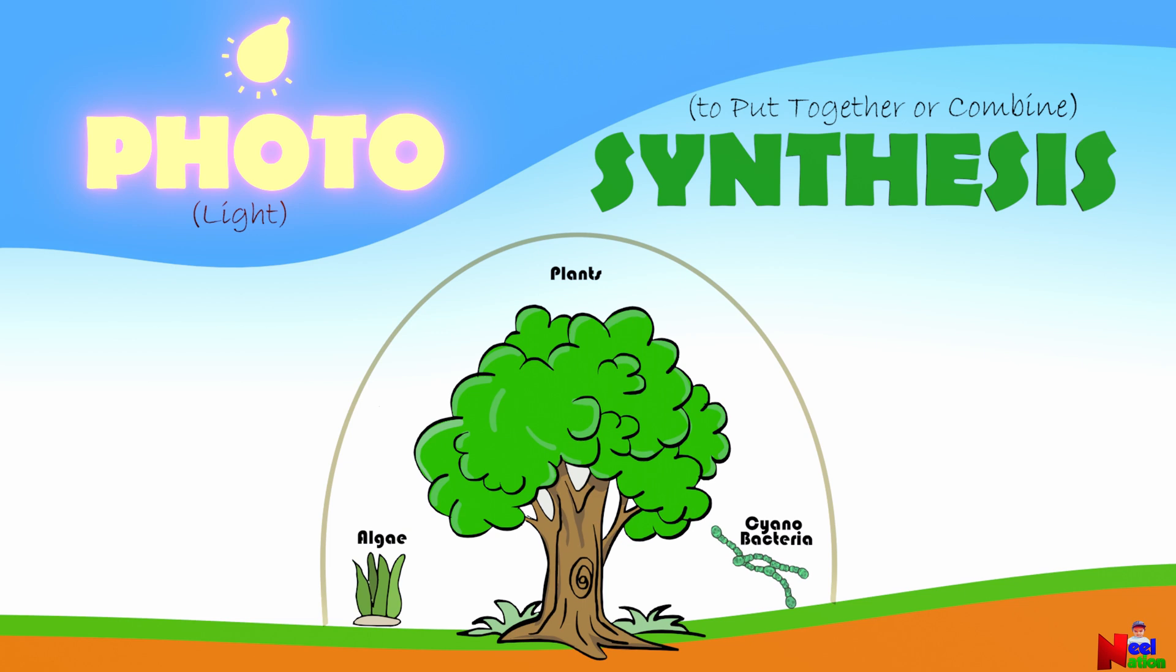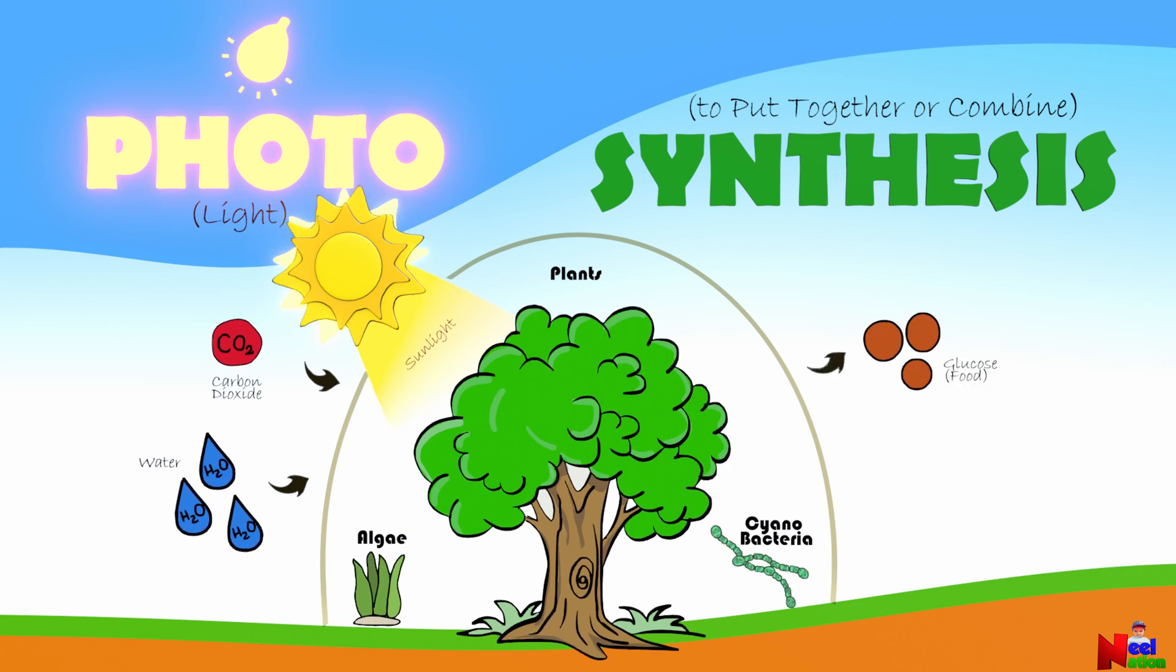Photosynthesis is the process by which green plants and other organisms like algae and some bacteria use sunlight to combine carbon dioxide and water to make food in the form of glucose. They release oxygen as a byproduct, which is essential for life on earth. Oxygen is a gas that we breathe. Yes, you are right.